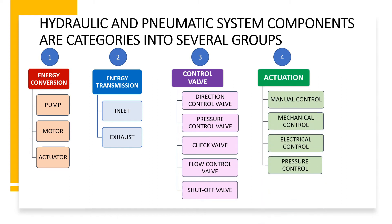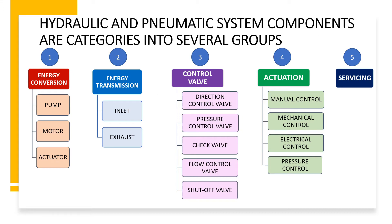The fourth group is actuation, which is used for controlling or providing signals to different components of the circuit. Actuation is done manually, mechanically, electrically, and by the pressure of fluid. The last group is service, which includes components like filters and intercoolers for fluid in hydraulic systems and lubricators for pneumatic systems. We will now go through all symbols of different components one by one and learn how to draw them and what care we need to take while designing circuit diagrams.